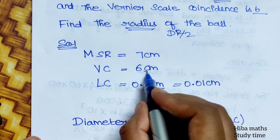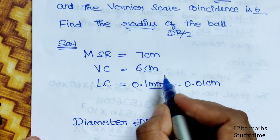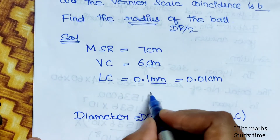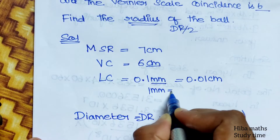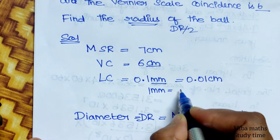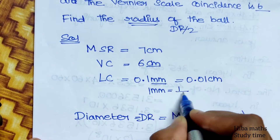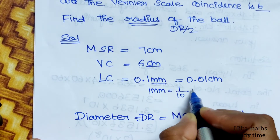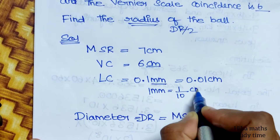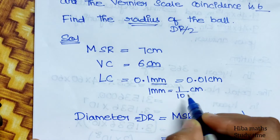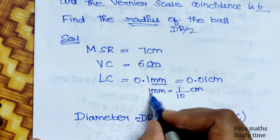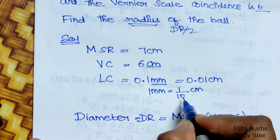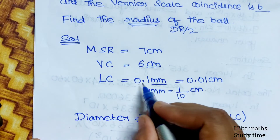That is the unit in centimeters. 1 mm is equal to 1/10 cm, and 1 cm is equal to 10 mm. That is the unit divided by 10.